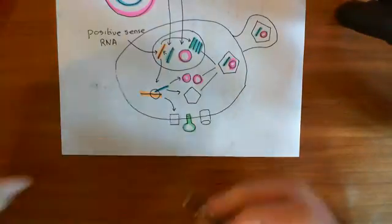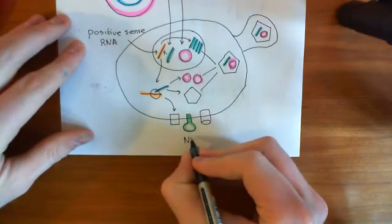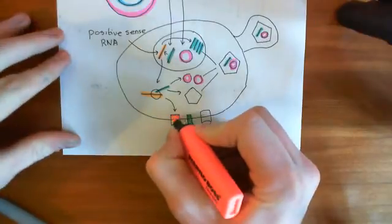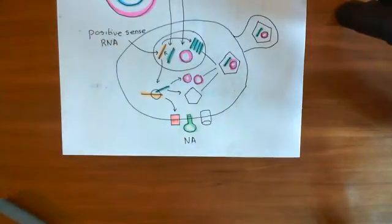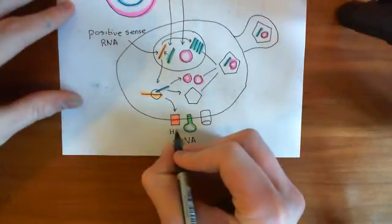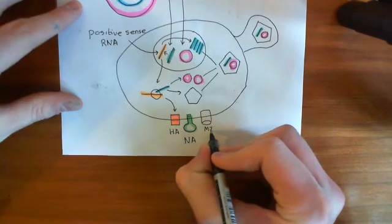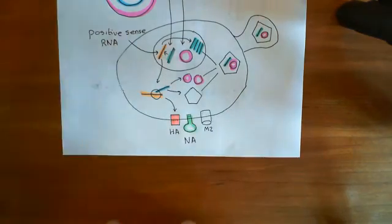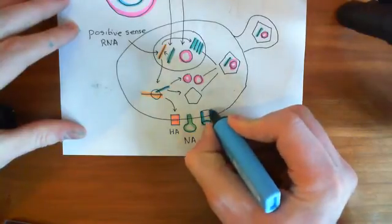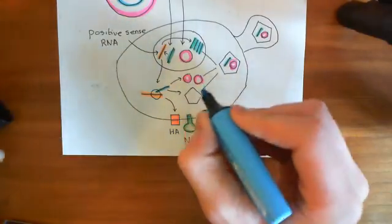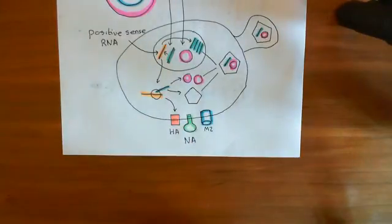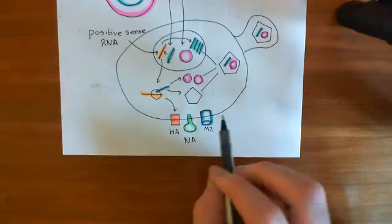So neuraminidase is labeled Na, hemagglutinin is labeled Ha, and the M2 ion channel is labeled M2. We make all of these proteins — we make the RNA-dependent RNA polymerases, we make the capsid proteins, and we make the membrane proteins of the viral envelope, which we send to the membrane of the cell.